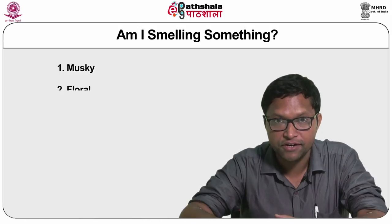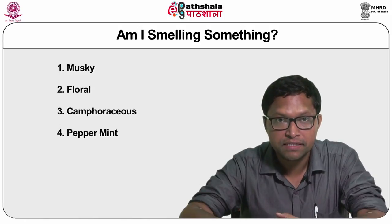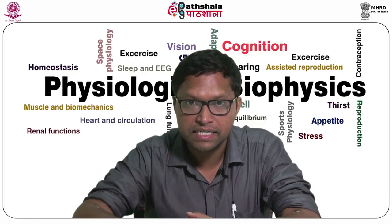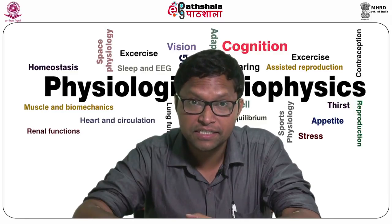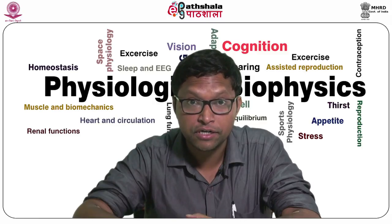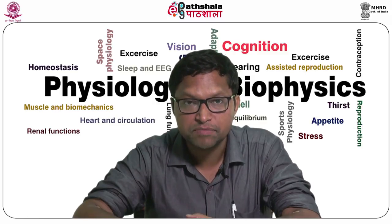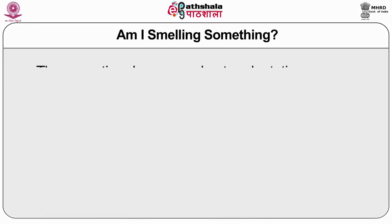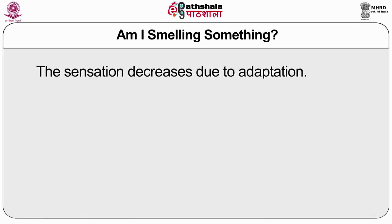The seven primary odors are: musky, floral, camphoraceous, peppermint, pungent, ethereal, and putrid. The intensity of sensation is related to the concentration of the substance. When we stay in a particular odor for a long time, we tend to ignore the smell — this is mainly due to a process called adaptation. With increasing duration of a stimulus, the sensation decreases due to adaptation.